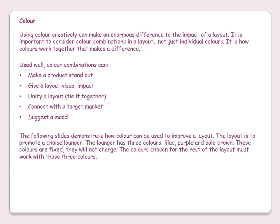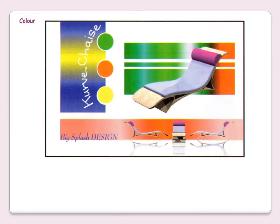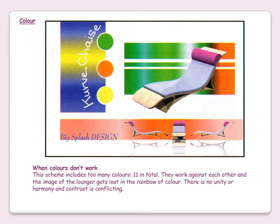The layout is to promote a chaise longue. The lounger has three colours — lilac, purple and pale brown. These colours are fixed and will not change. The colours chosen for the rest of the layout must work with those three colours. When colours don't work, this scheme includes too many colours — 11 in total. They work against each other and the image of the lounger gets lost in the rainbow of colour. There is no unity or harmony and contrast is conflicting. There is no real focal point and your eyes dart all over the place.